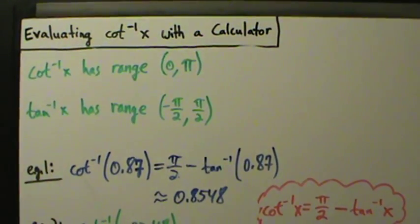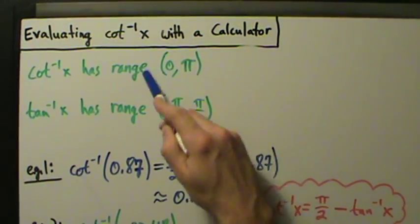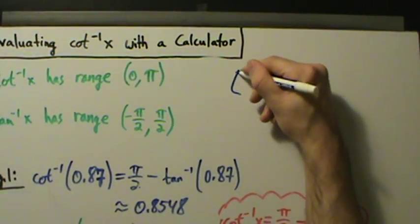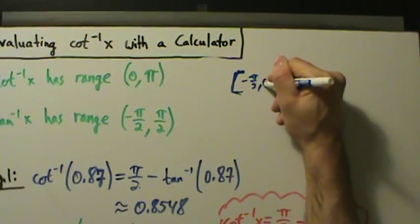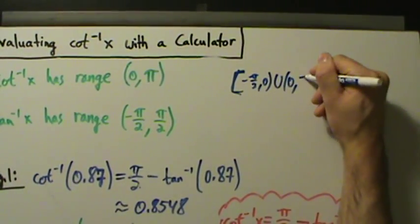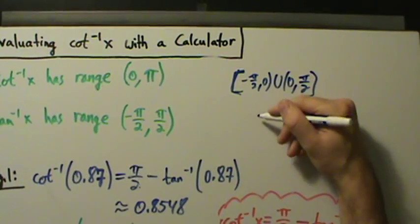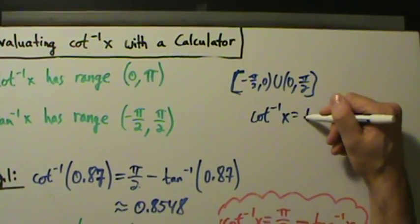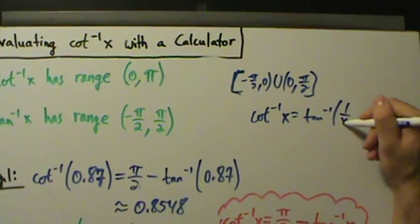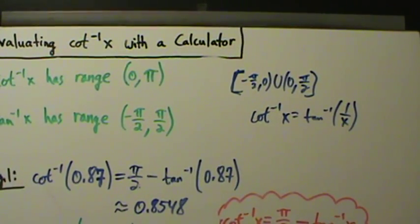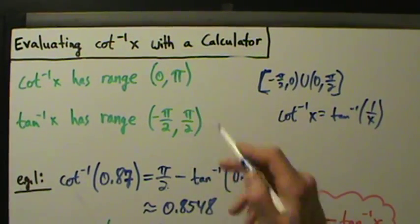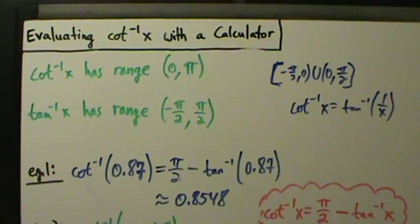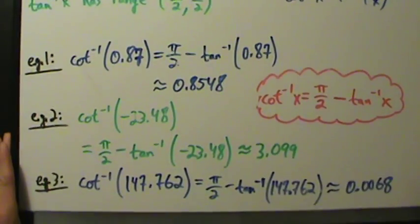That's pretty much it for evaluating the inverse cotangent function with the calculator. Be very careful about what the range is: if the range is 0 to π, use the formula arccot(x) = π/2 − arctan(x). If the range was negative π/2 to 0 union 0 to π/2, then you'd use the formula similar to the other formulas from the previous videos — but we didn't do that here, since when we defined the inverse cotangent function in an earlier video, we used the range 0 to π.